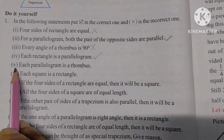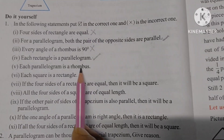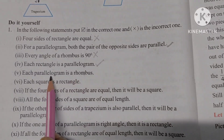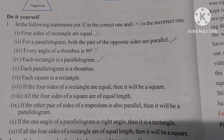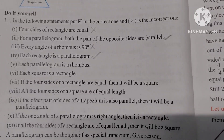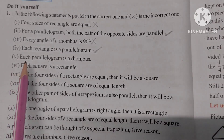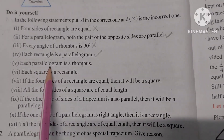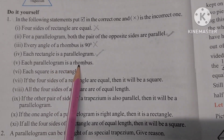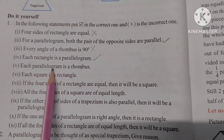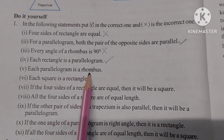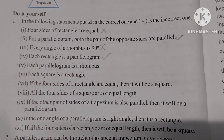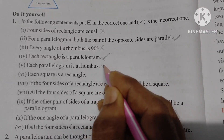Number 5: Every parallelogram is a rhombus. In a rhombus, all sides are equal, but in a parallelogram, all sides are not necessarily equal. Therefore, not every parallelogram is a rhombus. This statement is incorrect.